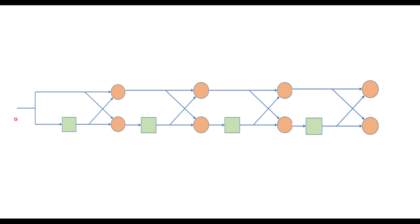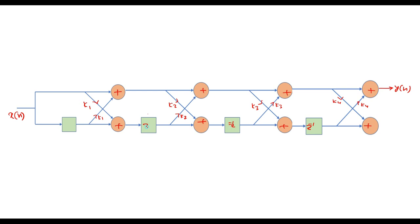Now let me draw the lattice structure. This is the lattice structure. The input is x(n) and the output is y(n). The coefficients are k1, k1, k2, k3, and k4. We have adders, and z-inverse delay elements at each stage. This is the complete lattice structure. Thank you for watching.